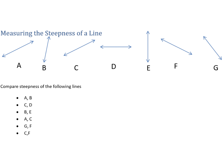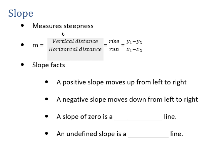To measure steepness, we use slope, which we denote with m. Slope is the vertical distance over the horizontal distance traveled from one point to another on the line. A helpful way to remember this is rise over run. The formula using two points is: m = (y₁ - y₂) / (x₁ - x₂).